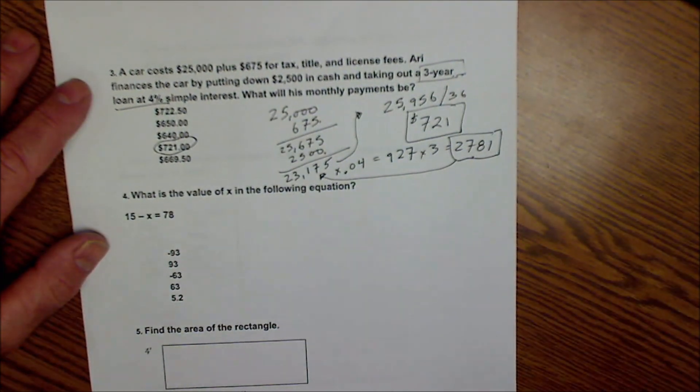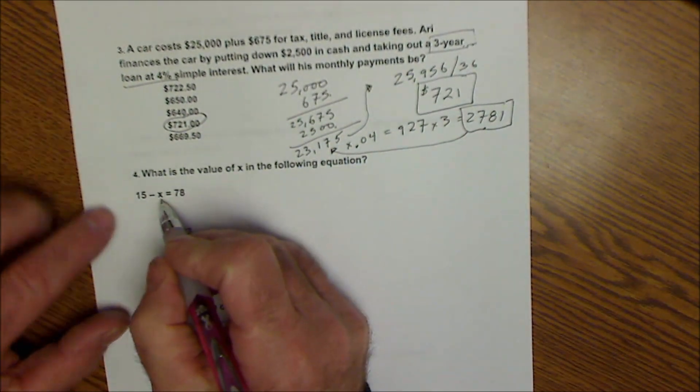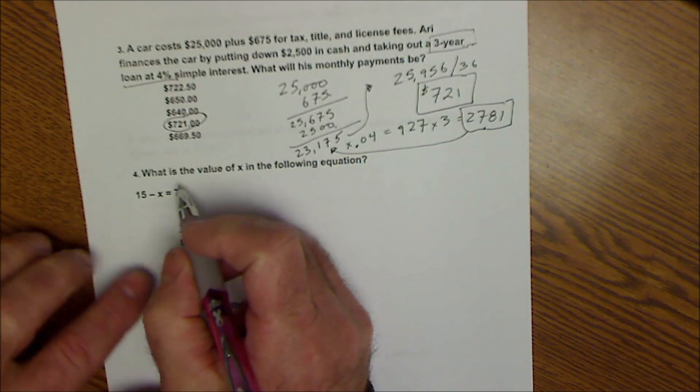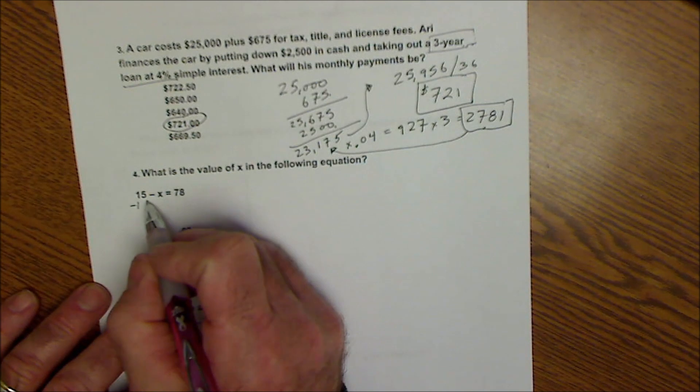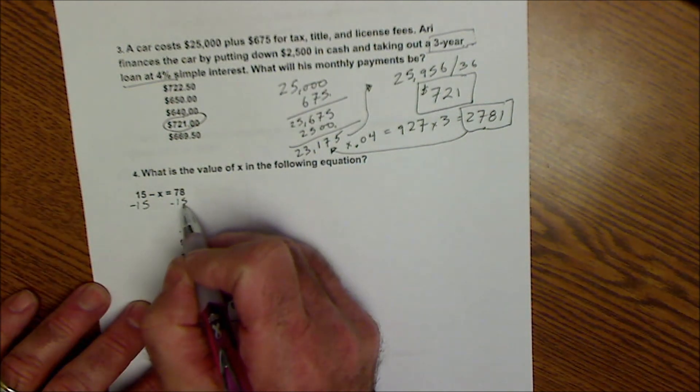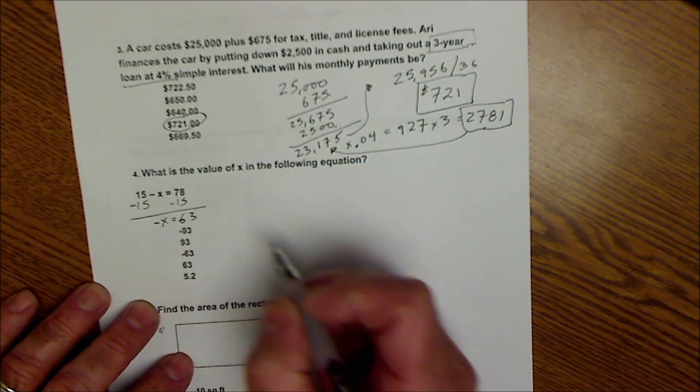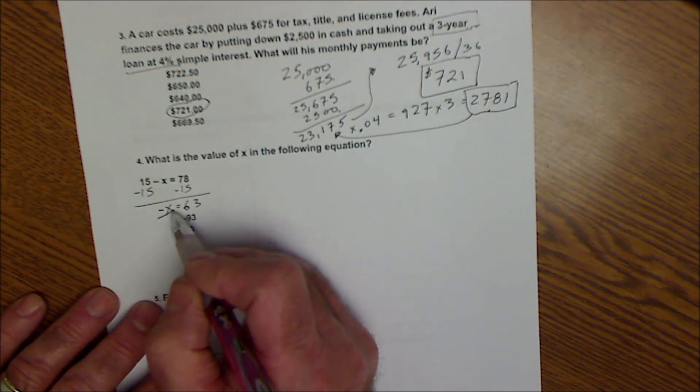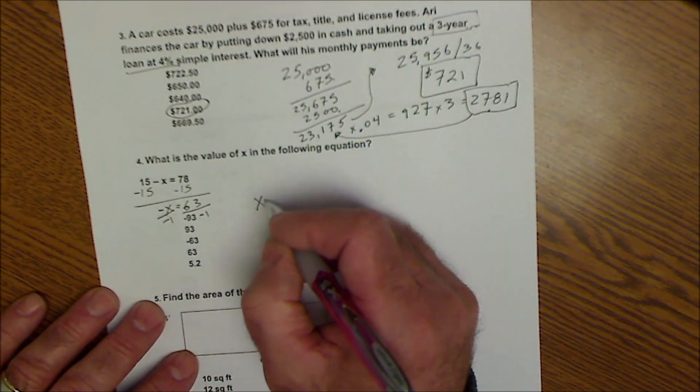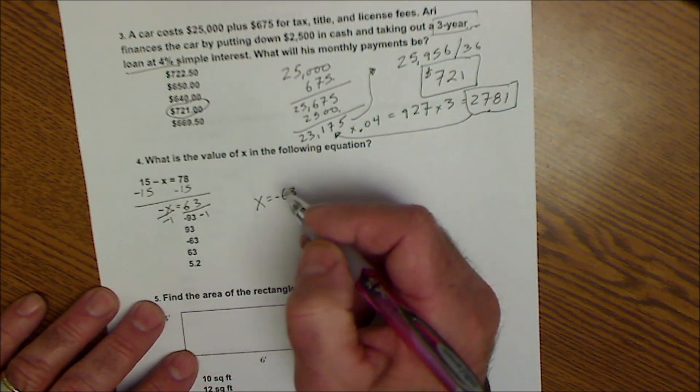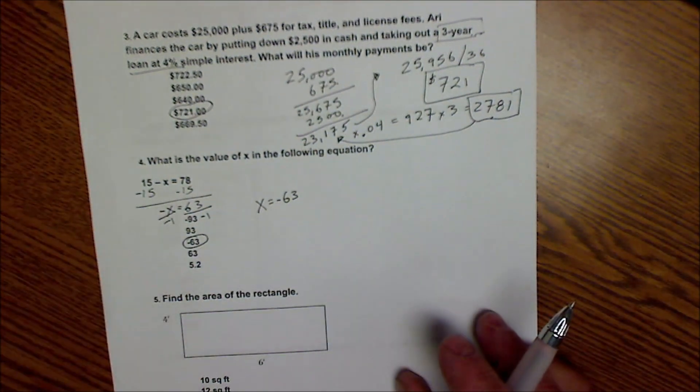What is the value of X in the following equation? Well, the way I solve equations is I need to get X, the variable, by itself. I reverse my operations to do that. If I'm adding 15 to it, I now subtract 15. So then I have negative X is equal to 63. Still solving for X, I divide both sides by negative 1 to get a positive X, and I have X equals negative 63. So there's the distractor there. There's the correct answer, negative 63.